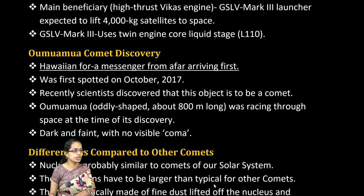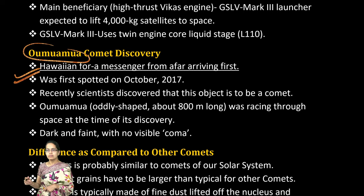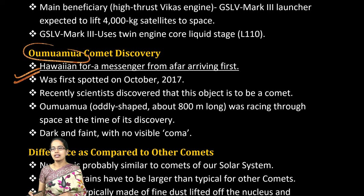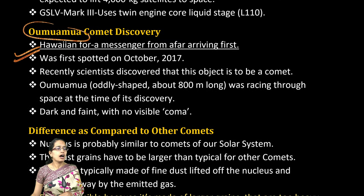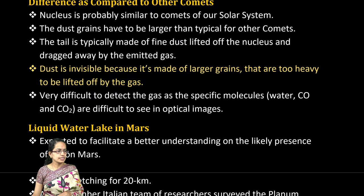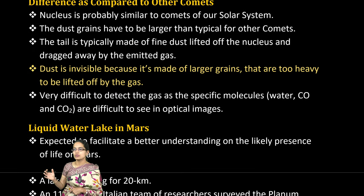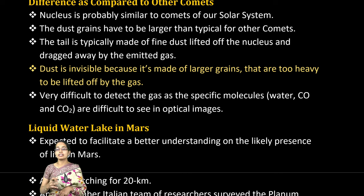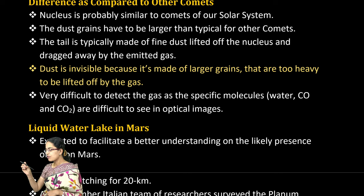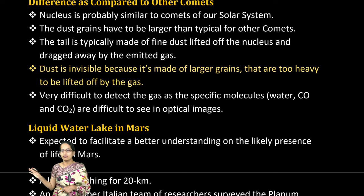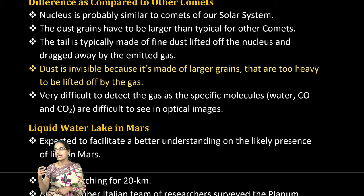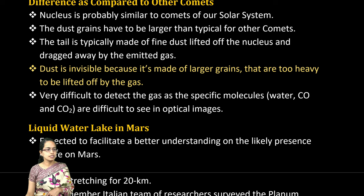The next is comet discovery — the Oumuamua comet. In Hawaiian, Oumuamua means 'a messenger from afar arriving first.' This comet is different from others because the dust is invisible, it is made of larger-sized grains, and the tail is composed of finer particles moving away from the nucleus, making it very hard to detect specific gas molecules.